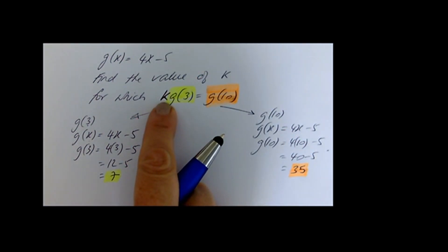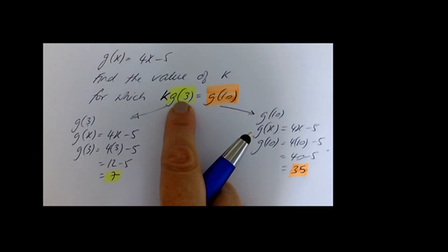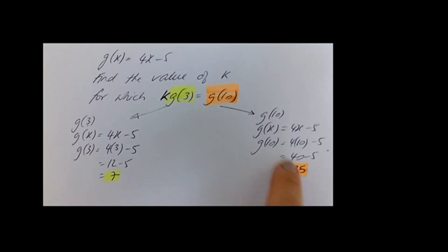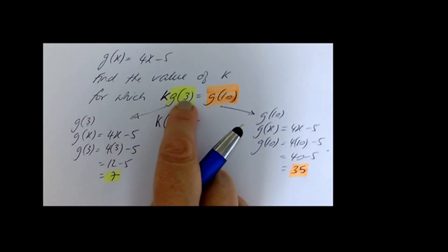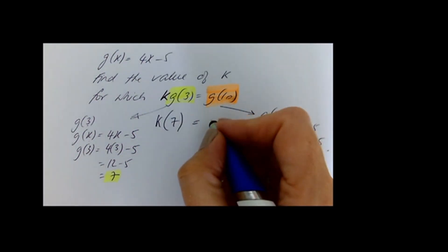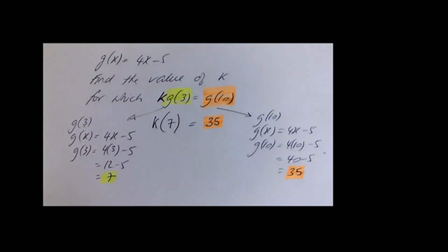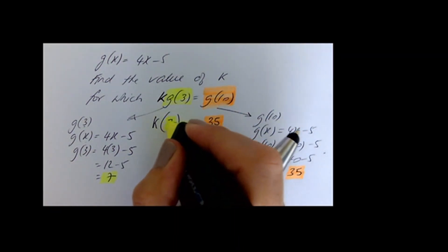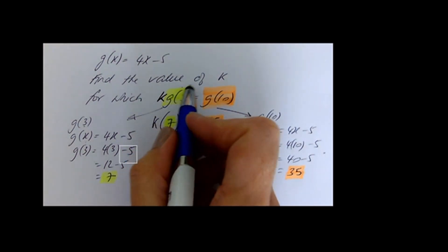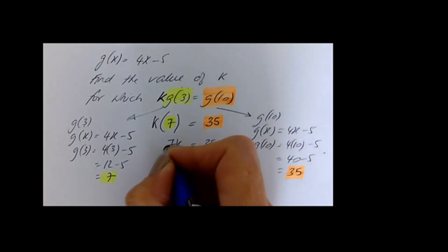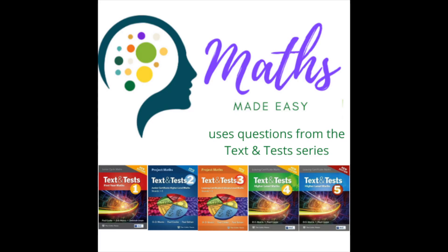Now substitute the values in. Replace g of 3 with 7 and g of 10 with 35 — keep brackets around what you're substituting because k right beside g of 3 means k times g of 3. So the equation becomes k times (7) equals 35, which gives 7k equals 35. Divide both sides by 7, and we get k equals 5.